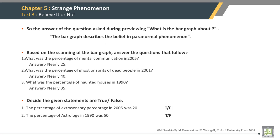What was the percentage of haunted houses in 1990? Answer: nearly 35. Now decide if the given statements are true or false. The percentage of extrasensory perception in 2005 was 20 — this statement is false. The percentage of astrology in 1990 was 50 — this statement is also false.